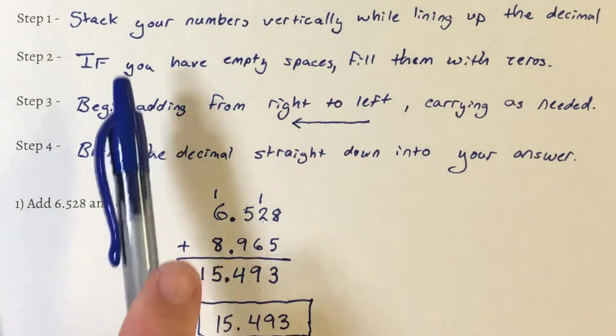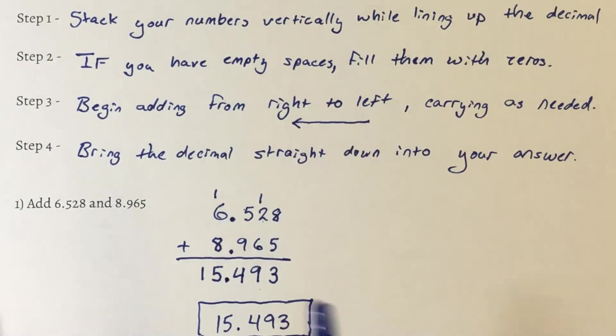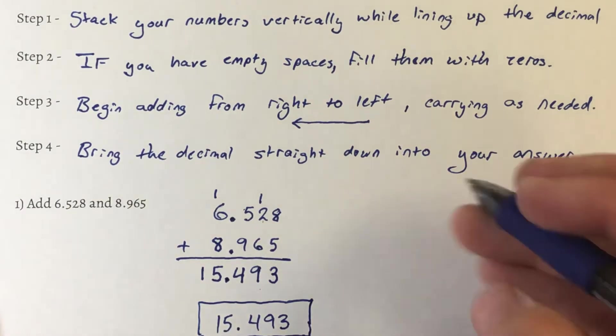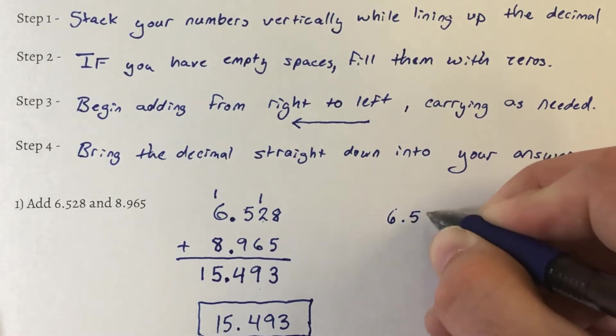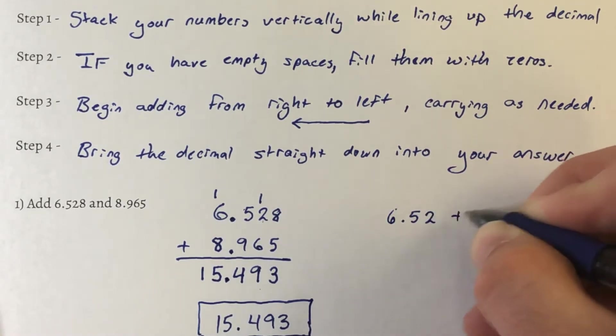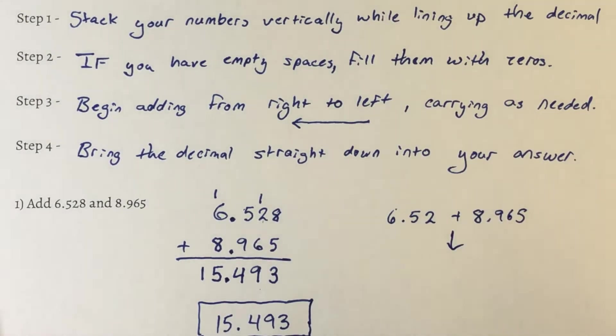Now, that second step was if you have empty spaces, fill them with zeros. We did not have any empty spaces. So I did not have to use that step. So what would a problem look like if you had that? Let's say I had 6.52 plus 8.965. What would that look like?